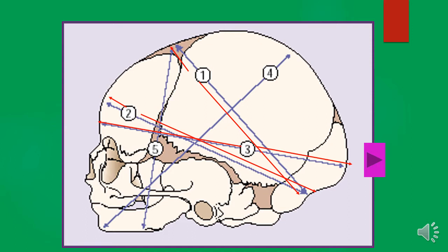Our third diameter is called the occipital frontal. The occipital frontal is about 11.5 centimeters, and it is measured from the occipital protuberance to the glabella — from the occipital protuberance to the glabella. That is our third diameter on our fetal skull diagram.